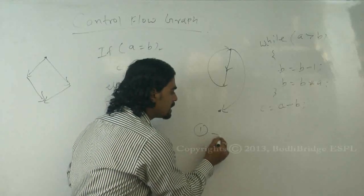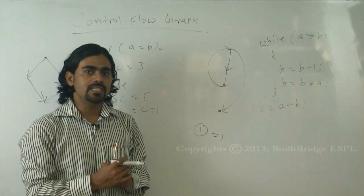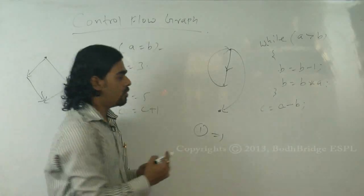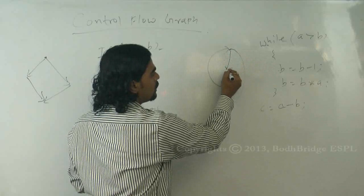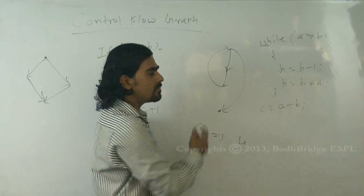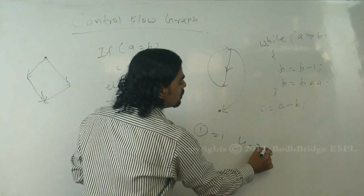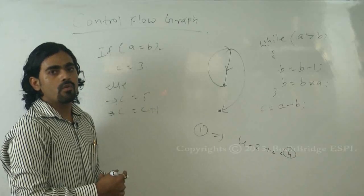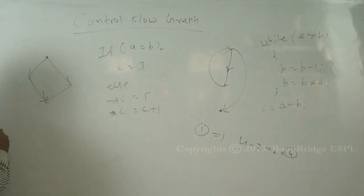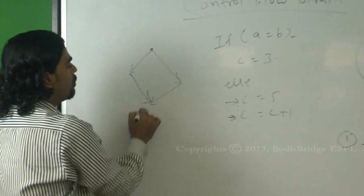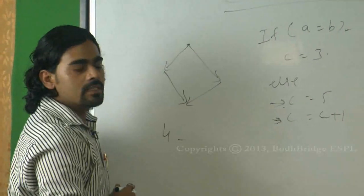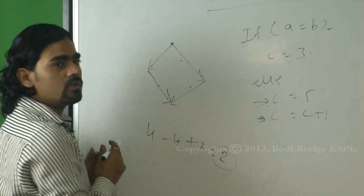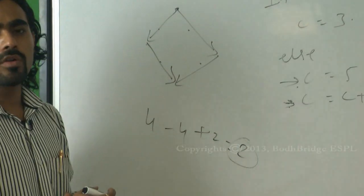The first method states: take the number of edges minus the number of vertices, plus 2. For the first graph, we have 1, 2, 3, and 4 vertices, and 1, 2 edges — so 4 minus 2 plus 2 gives complexity 4. For the second graph, how many vertices? 1, 2, 3, 4 — four vertices. How many edges? 1, 2, 3, 4 — four edges. So 4 minus 4 plus 2 equals 2. Complexity will be 2 here. So complexity is always: number of edges minus number of nodes plus 2.